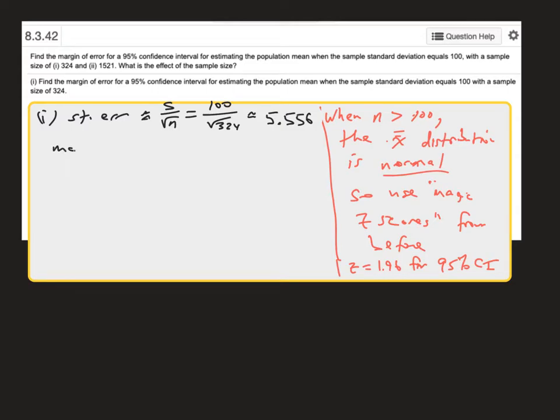The second step is the margin of error. We're going to use 1.96 as the magic z score that goes with 95% confidence, and multiply that by the standard error. So margin of error is 1.96 times standard error, and for that I get, assuming I want two decimal places, 10.89.